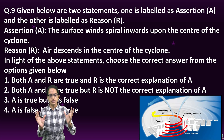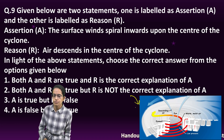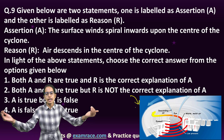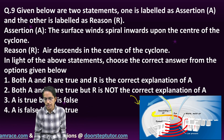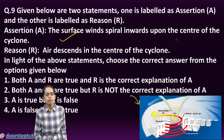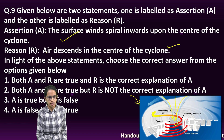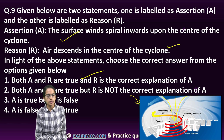The next question is an assertion-reason question. If you simply look at the diagram carefully, you will be able to solve it. The surface winds spiral inward upon the center of the cyclone — that's correct, they are moving inside toward the center. Air descends in the center of the cyclone — the reason is correct. So both assertion and reason are correct and the reason is the correct explanation for the assertion.